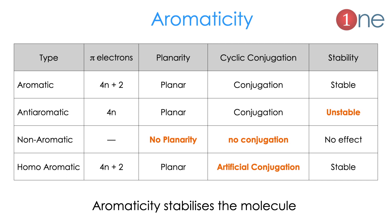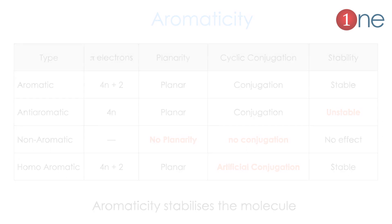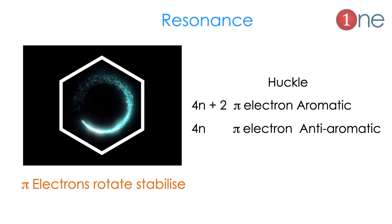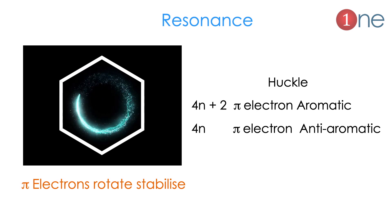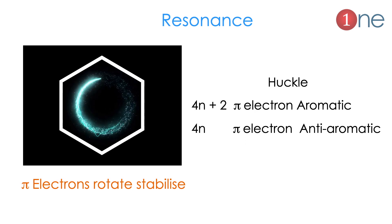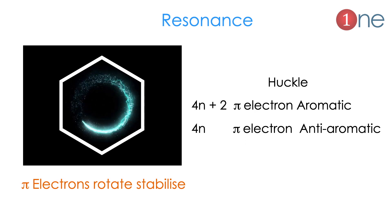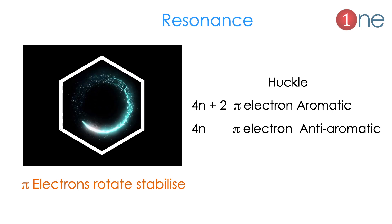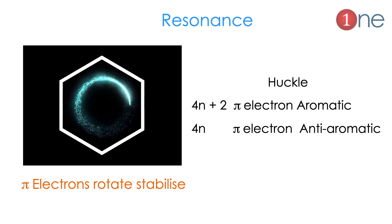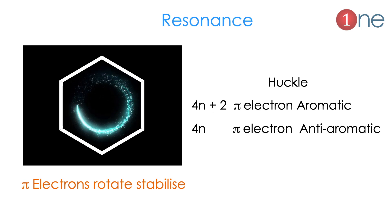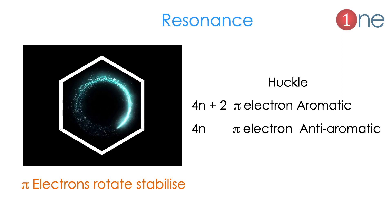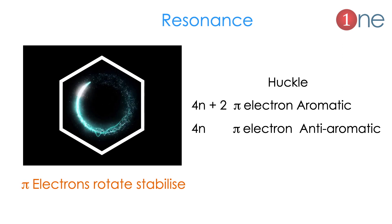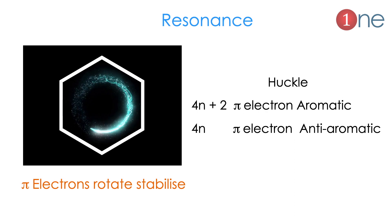Aromaticity stabilizes the molecules. Before we go into what aromaticity really is, we will see resonance, because resonance means the electrons rotating inside the benzene molecule or any aromatic molecule — the electrons revolve around the conjugated bonds. If it has 4n+2 pi electrons, it is called aromatic. If it has 4n pi electrons, it is anti-aromatic. The delocalized pi electrons stabilize the system. So you should know that resonance is part of aromaticity.